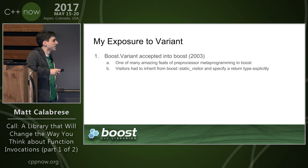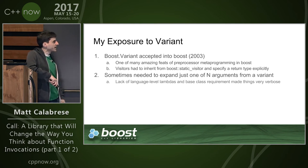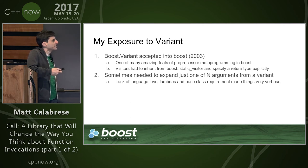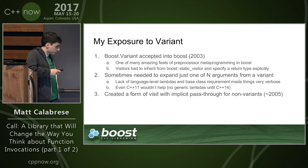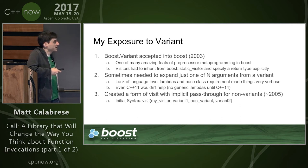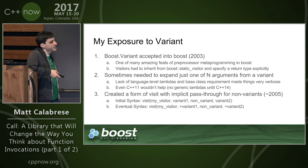Using Boost.Variant was unfortunately very frustrating. Visitors had to inherit from 'static_visitor' and you had to specify your return type explicitly because there was no return type deduction. Expanding just one argument from a variant was really difficult, especially without language-level lambdas — you basically had to manually create function objects inheriting from static_visitor. Even in C++11 we didn't have a great solution because we didn't have generic lambdas.